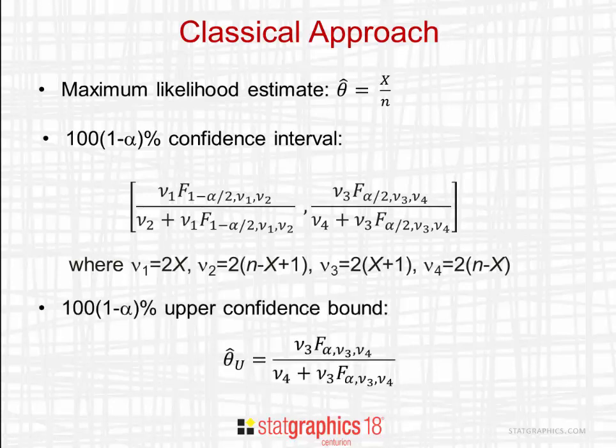Since we're often concerned when we do a process capability analysis about how bad things could be, it's common to calculate upper confidence bounds rather than two-sided confidence intervals. You see here the equation for the upper confidence bound on the proportion of non-conforming items.